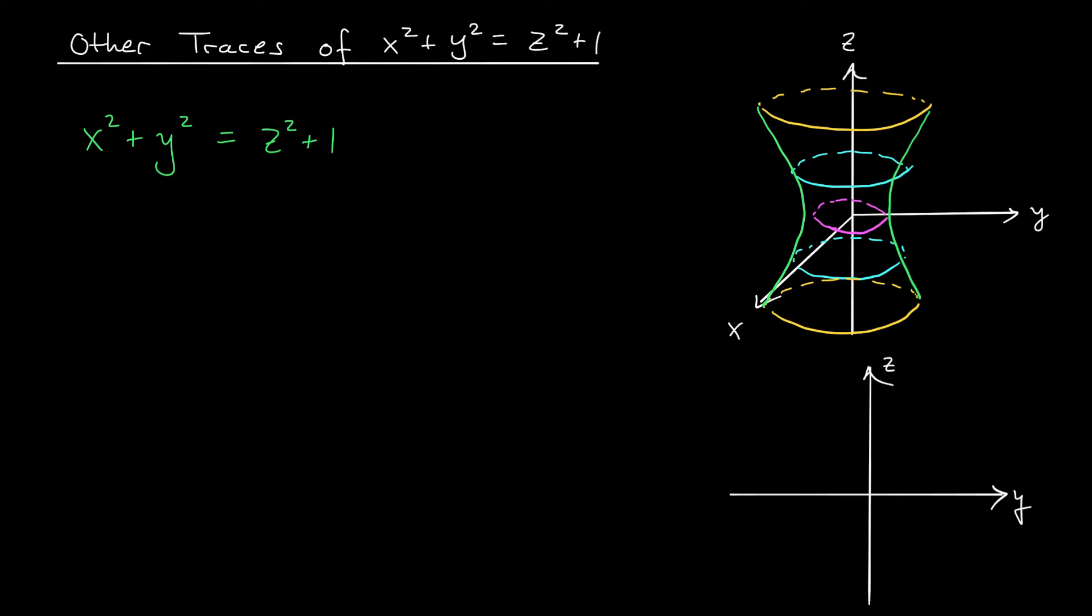We're going to set x equal to k and take a look at the equation that results. We get k² + y² = z² + 1.